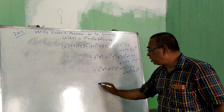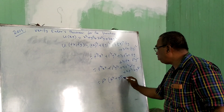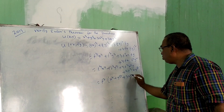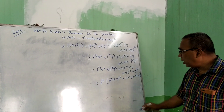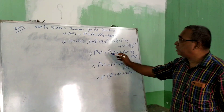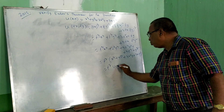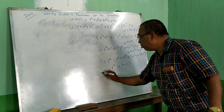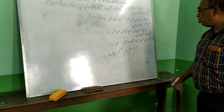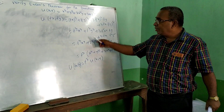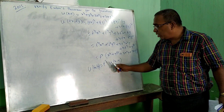Now, taking t³ common, we get t³(x³ + 3x²y + 3xy²). This can be written as t³·U(x,y), that is U(tx, ty) = t³·U(x,y). So we can say this function is a homogeneous function of degree 3.